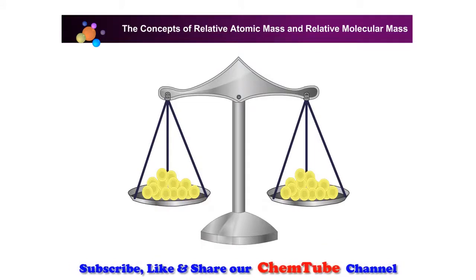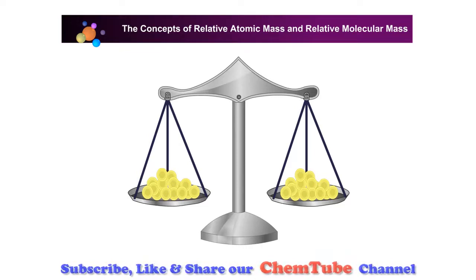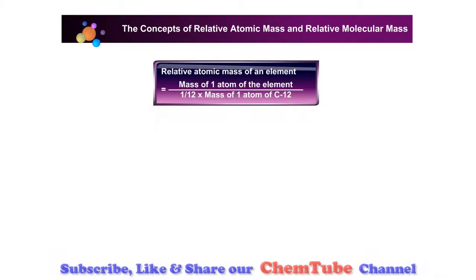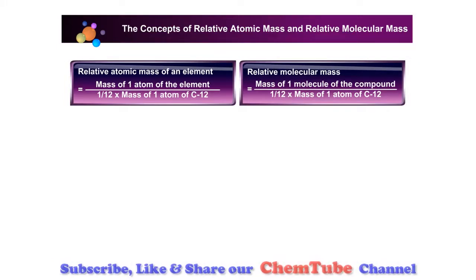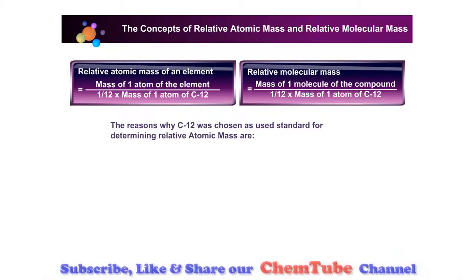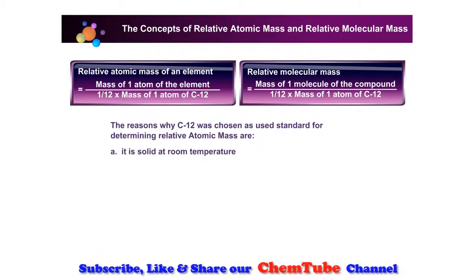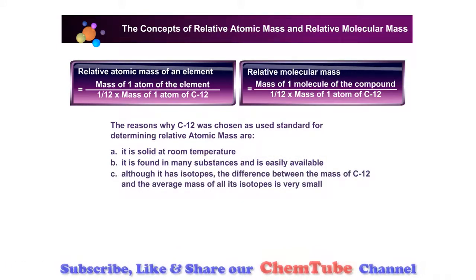In this lesson, you have learned that the relative atomic mass of an element is the number of times the mass of one atom of an element is heavier than one-twelfth of the mass of an atom of carbon-12. The relative atomic mass is the mass of an atom of the element compared to one-twelfth of the mass of a carbon-12 atom. The relative molecular mass is the mass of a molecule of the compound compared to one-twelfth of the mass of a carbon-12 atom. The reasons for using carbon-12 as a standard are: it is solid at room temperature, it is found in many substances and easily handled, and the average mass of its isotopes is exactly 12 units.